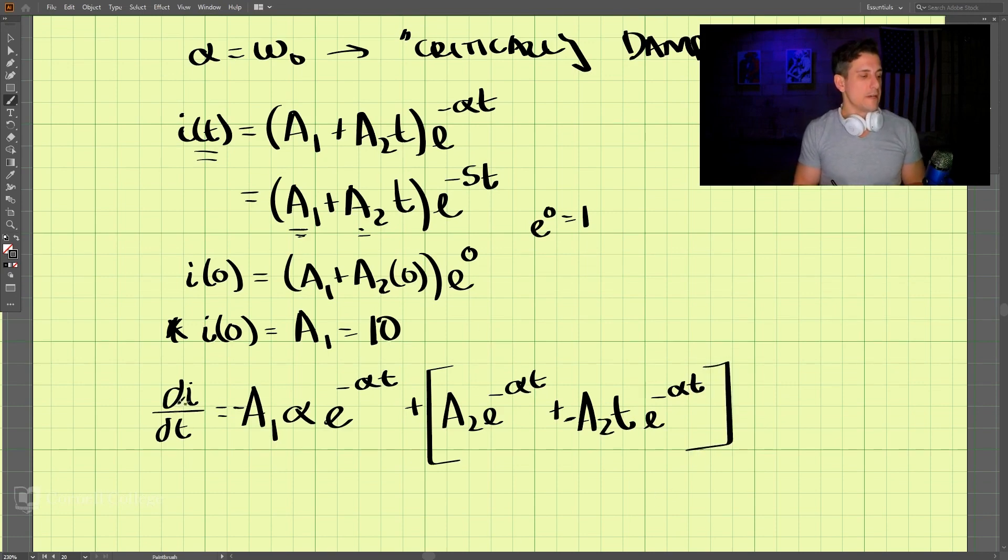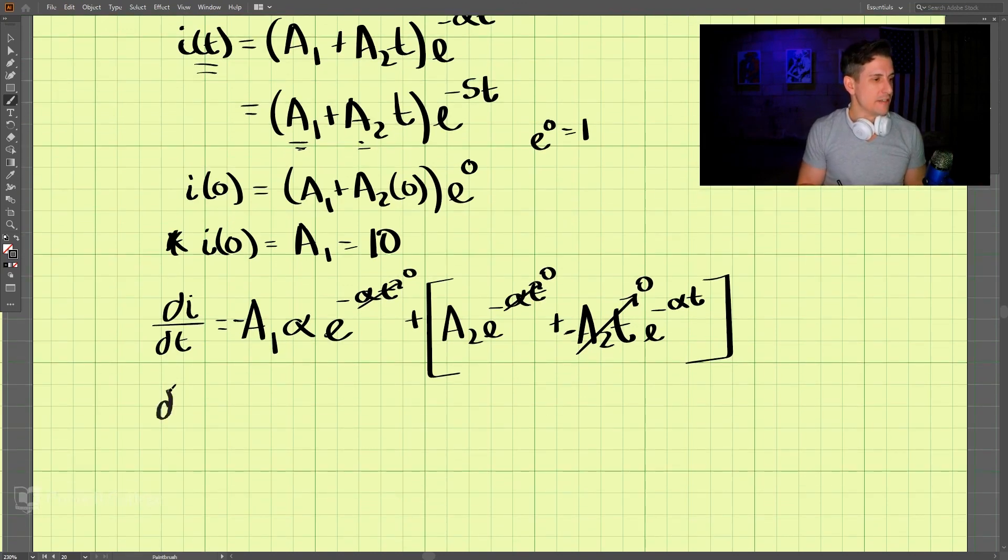Now, if we do this and plug in 0, so we're going to plug in 0 for t. So this is 0 and this value would be 0 and this is 0. I believe what we get here is di(0)/dt is equal to negative A1 alpha plus A2.